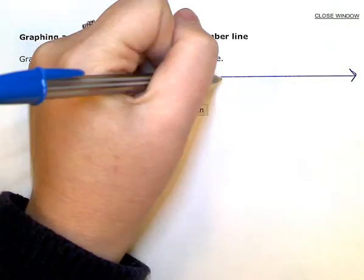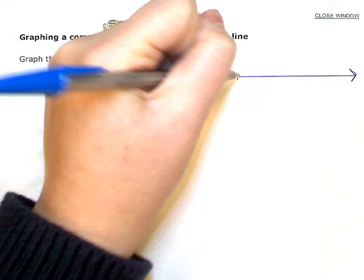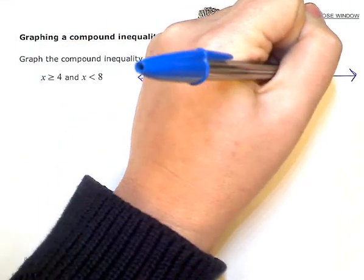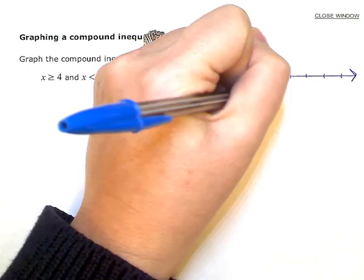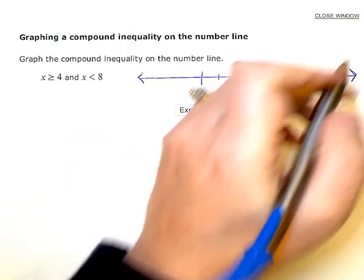So if we did one, two, three, four, five, six, seven, eight. Four would be here. Eight would be here. Okay.